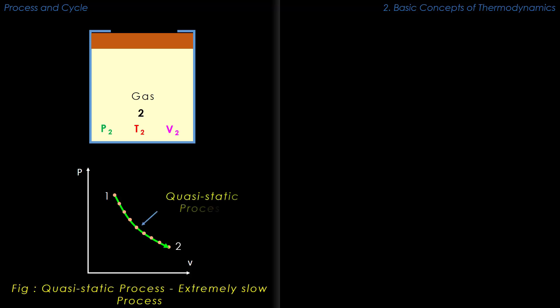Such kind of slow process, which passes through all equilibrium states, is called a quasi-static process.